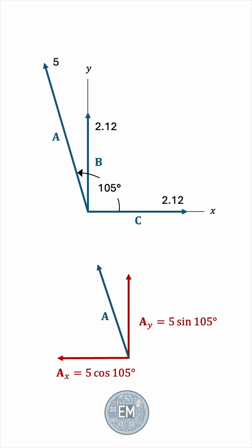5 cosine 105 degrees is around 1.29. It's negative because it's the cosine of an obtuse angle, but the negativity is already shown with the direction of ax being to the left. The vertical component works out to be 4.83.